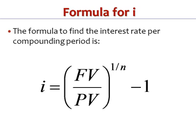So if our compounding periods are annual, I will give us a nominal rate. But if they're monthly, this is a rate per month — to bring it back up to a year, we'll multiply by 12 to get the nominal rate compounded monthly. If they're quarterly, we'll multiply by four once we're done, that sort of thing.